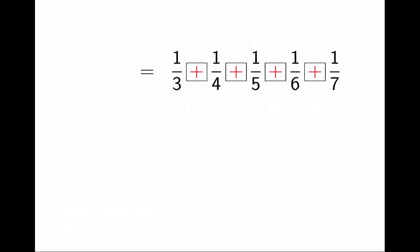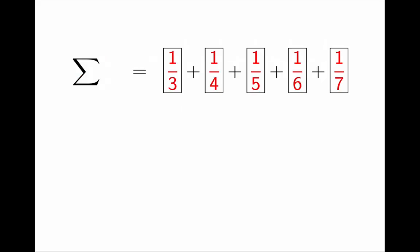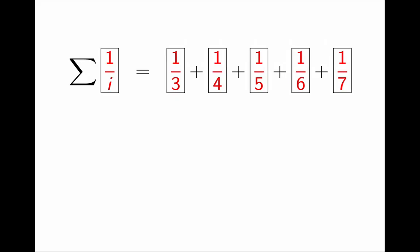To write sums in a compact way, we use the Greek letter uppercase sigma. I look at the terms I am adding, and they are all 1 over something. All the terms I am adding have the form 1 over i, where i takes some integer values.